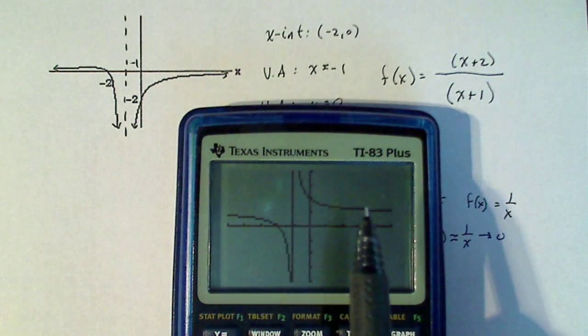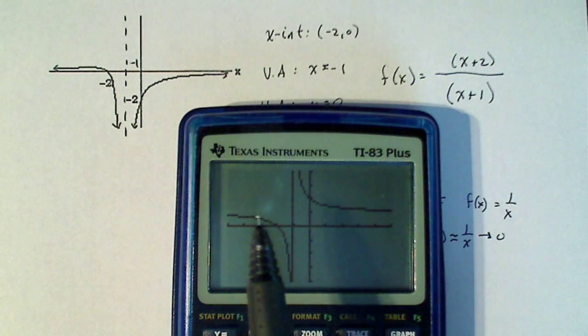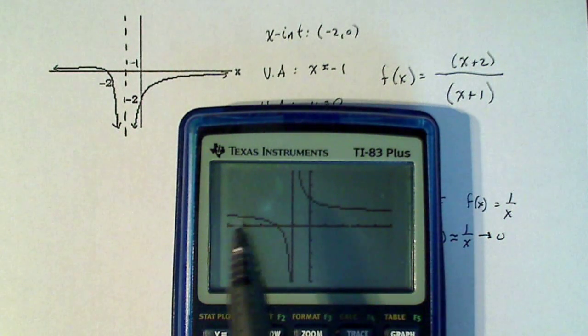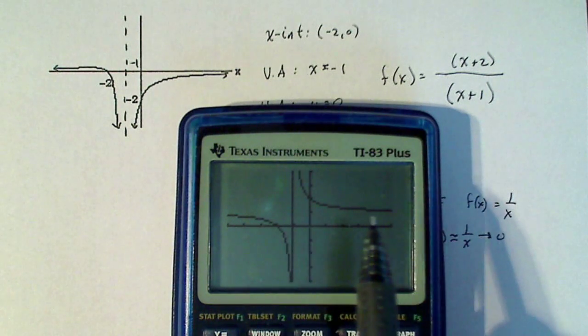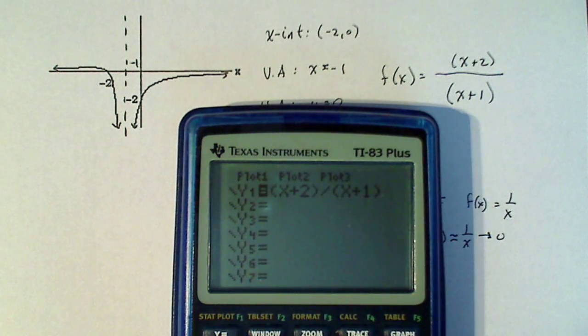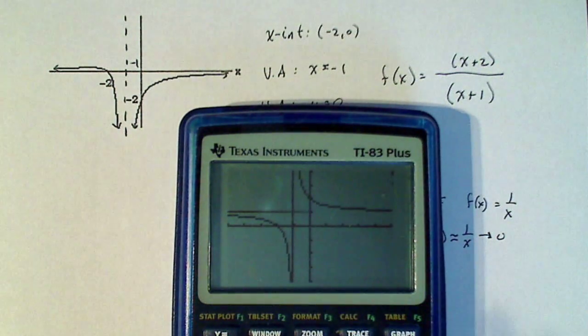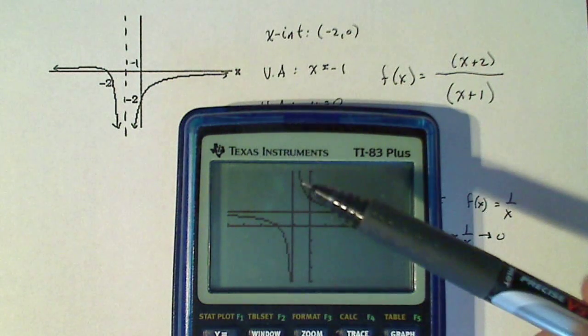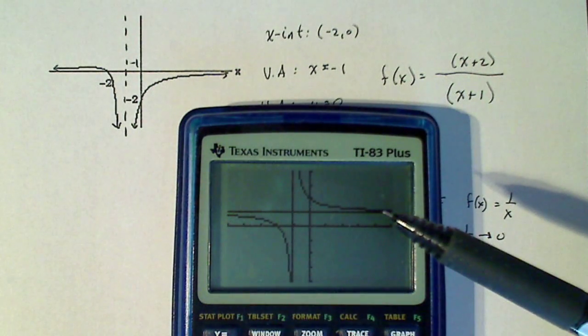And notice I don't have, this doesn't dip down. That seems to be level. Looks like it has a horizontal asymptote at one. Let's check it out. And sure enough, that's not what we want. Now just shifting it down won't work because this whole branch is actually in the wrong place.